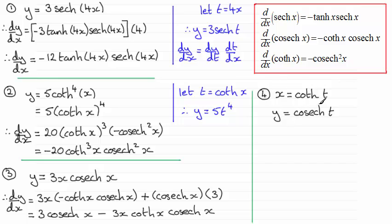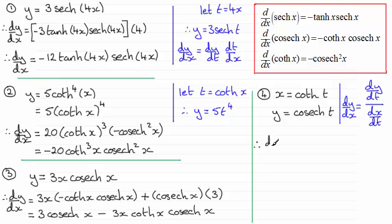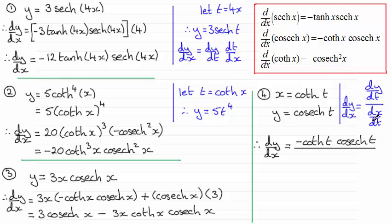Finally, number 4. To find dy/dx, remember you've got to use the chain rule again. dy/dx is going to equal dy/dt divided by dx/dt. So if y equals cosech(t), by the result we have minus coth(t) cosech(t). That is divided by dx/dt, and the differential of coth(t) by this result is minus cosech squared(t).